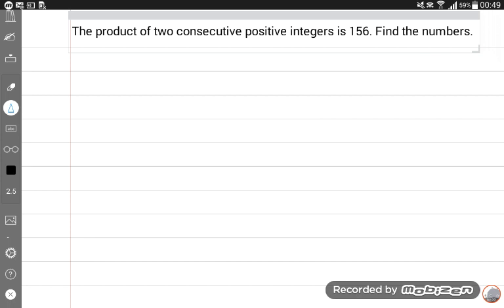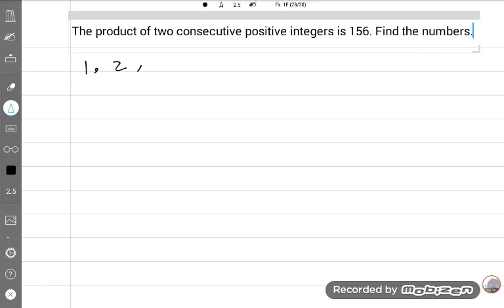Product of two consecutive positive integers. We write numbers for understanding the concept: 1, 2, 3, 4, 5, 6, 7, 8, 9, 10 and so on. If 1 is the first positive integer, the second consecutive number will be 2. It means 1 plus 1 is 2, 2 plus 1 is 3, 3 plus 1 is 4, 4 plus 1 is 5, 5 plus 1 is 6.